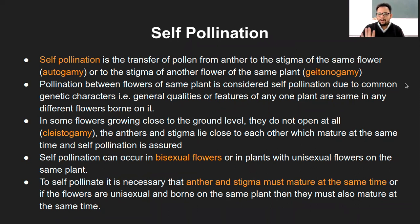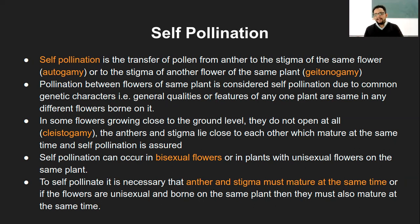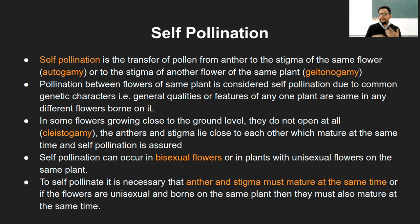Autogamy refers to the transfer of pollen from anther to stigma of the same flower — only one flower is involved. Geitonogamy is the transfer from one flower to the stigma of another flower on the same plant. Kleistogamy occurs when flowers are closed and do not open at all; the anther and stigma are close to each other and pollinate — kleisto means closed.